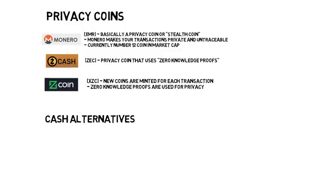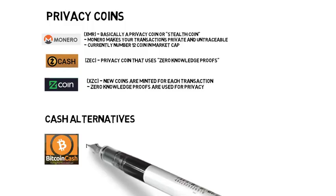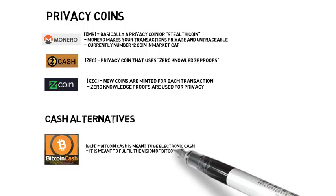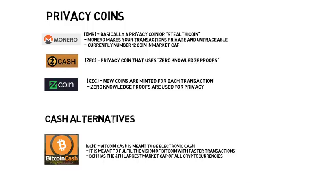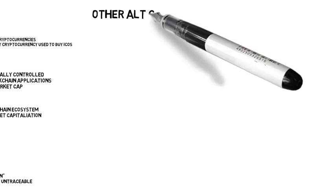Next up, we have cash alternatives. The most famous is Bitcoin Cash — a fork or split from Bitcoin, and the fourth highest market cap cryptocurrency right now. It transacts a lot faster than Bitcoin, so you could use it for transactions where maybe you couldn't use a Bitcoin. Also Dash, which they call digital cash, is another used for transactions and to buy and sell. Depending on where you live, there are tax implications to using these different things as digital cash, so you want to consult with a professional on that.